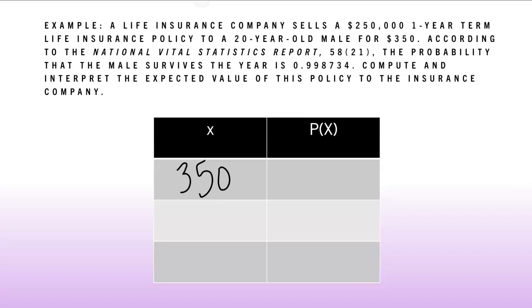That is because I'm the insurance company and someone buys the policy. Now they buy the policy. That means I profit $350. The probability of me profiting $350 is the same as the probability of the male surviving because if I don't have to pay out anything, if he survives, then I profit $350 as an insurance company. So my probability here will be 0.998734.